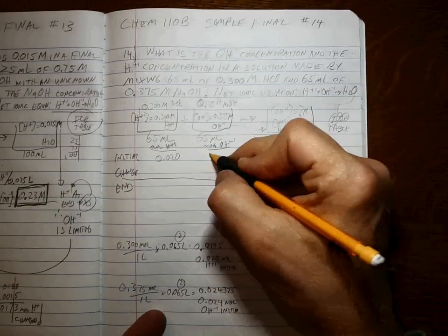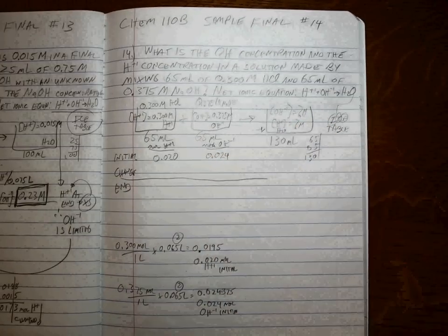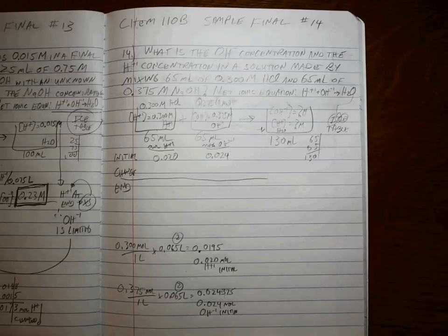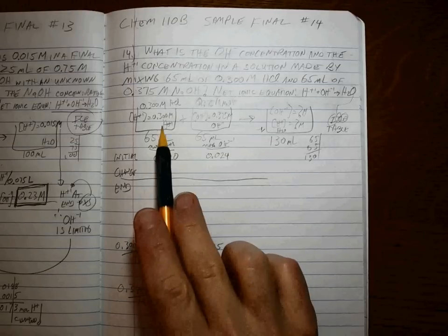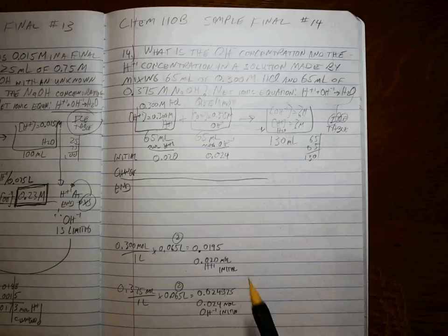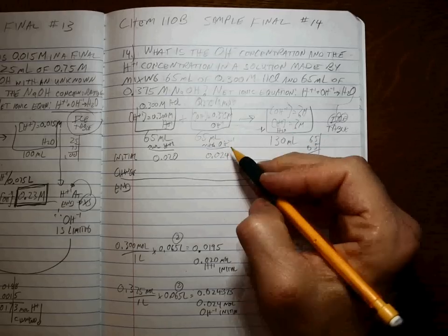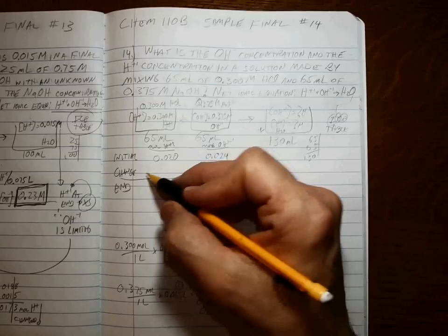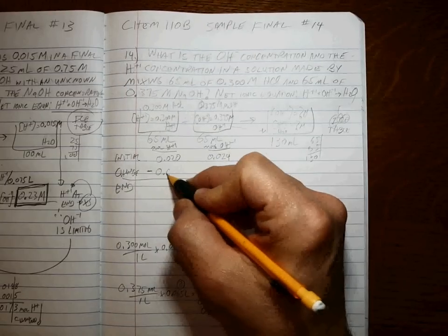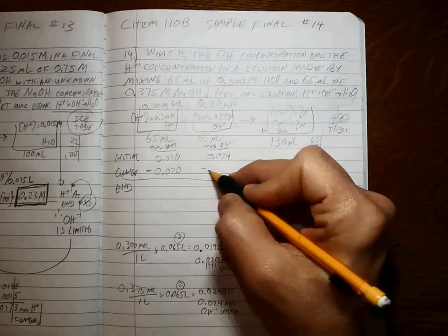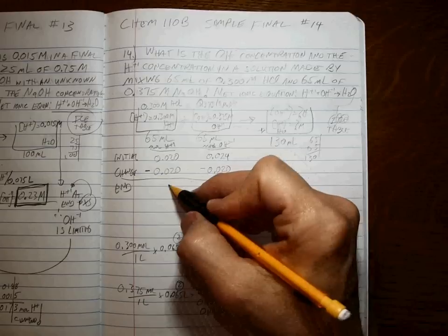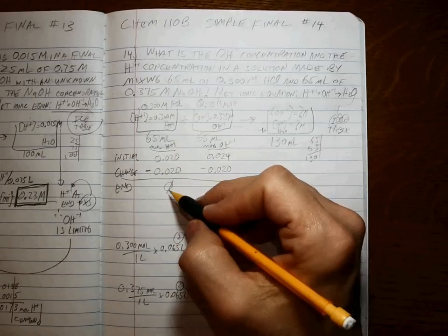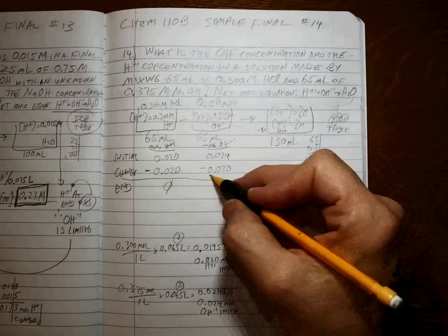Okay, so 0.024. So what's the reaction that goes on? Well, it's a one-to-one ratio, which means you know exactly how many moles reacts. It's the smaller number,